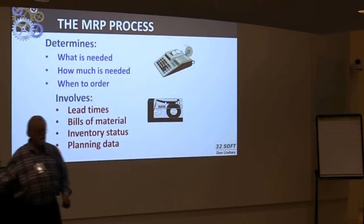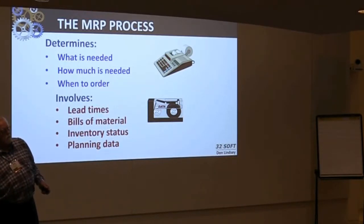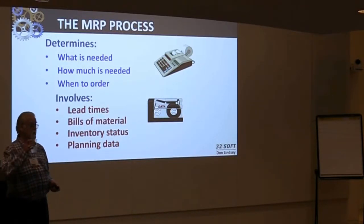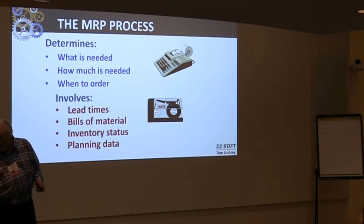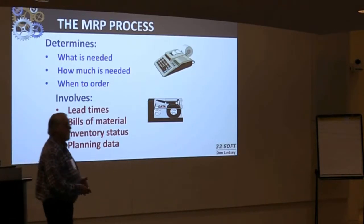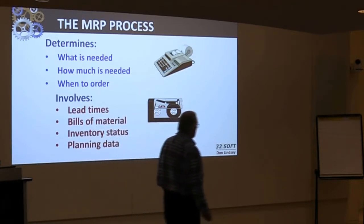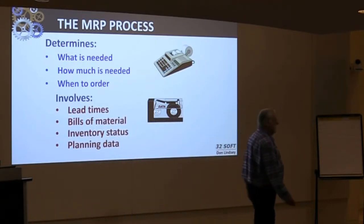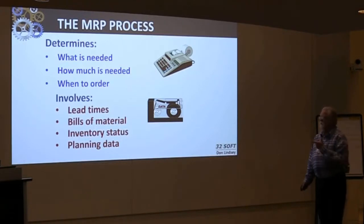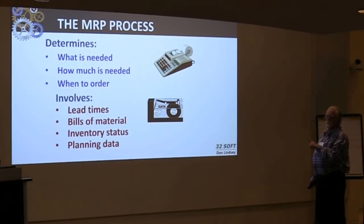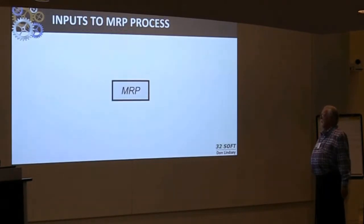The MRP process determines basically three things: what is needed, how much is needed, and when to order. It involves four primary pieces of information: lead times, bills of material, inventory status, and planning data.